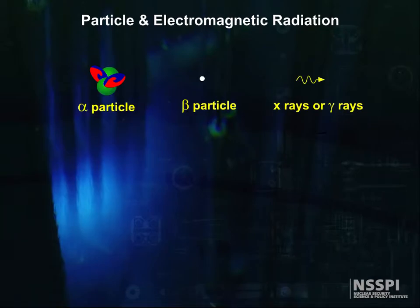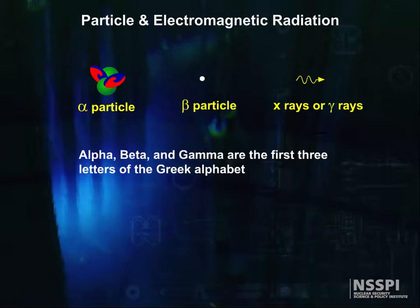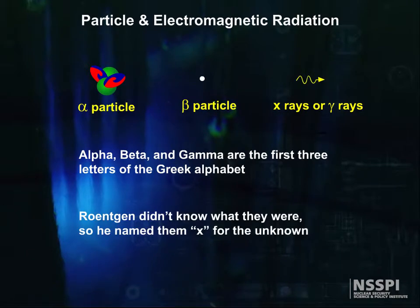On a historical note, the scientists who discovered radiation in the early days were not particularly inventive. Alpha, beta, and gamma are the first three letters of the Greek alphabet, and x-rays were so named because Röntgen didn't know what they were, so he named them X for the unknown.